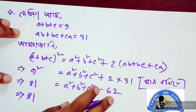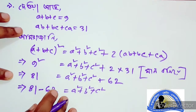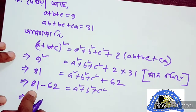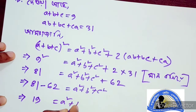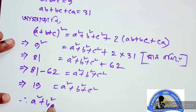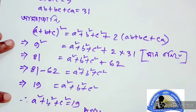So we have 81 equals a squared plus b squared plus c squared plus 62. Then a squared plus b squared plus c squared equals 81 minus 62, and we can write a squared plus b squared plus c squared equal to 19.